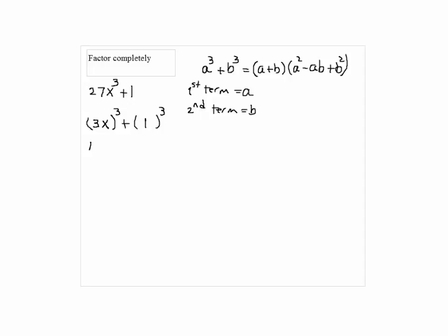The first term is A and the second term is B. You have to make this sum of cubes. We can do that by placing 3x here. When we cube that, we get 27x cubed. And 1 would be the cube, but that would be 1 also.